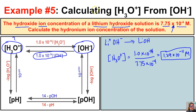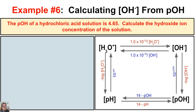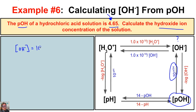So if the hydroxide ion concentration of lithium hydroxide is 7.75 times 10 to the negative 4, then the hydronium ion concentration is 1.29 times 10 to the negative 11 moles per liter. In this sixth example, the pOH of a hydrochloric acid solution is 4.65 and we want to calculate the hydroxide ion concentration. All we need to do is take 10 to the negative pOH, which is 10 to the negative 4.65, giving us 2.24 times 10 to the negative 5 molar.